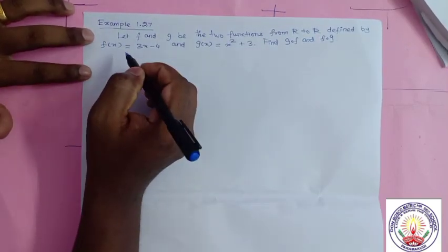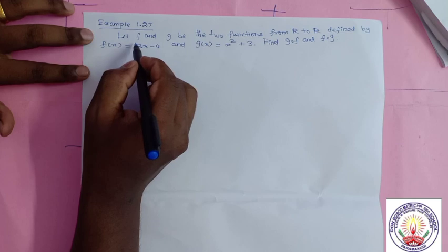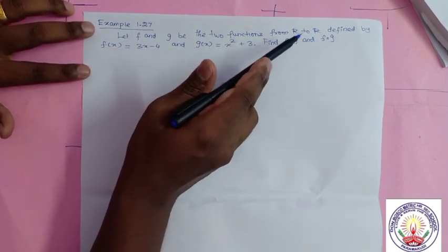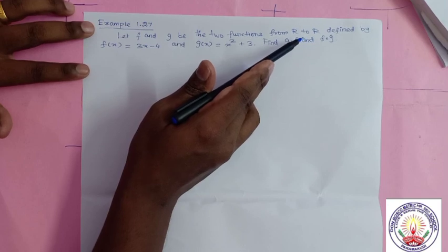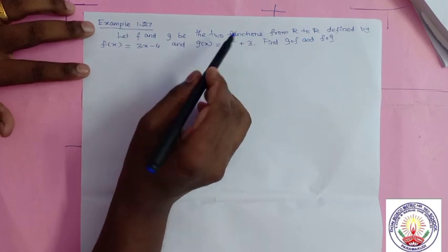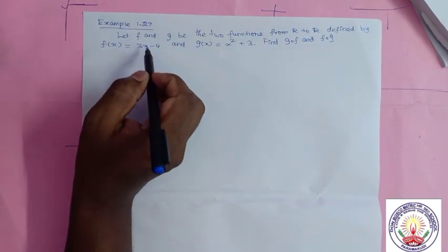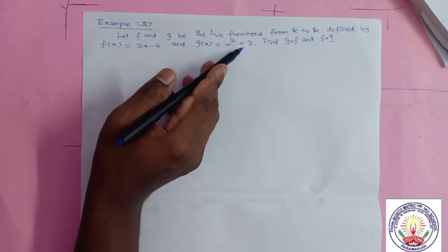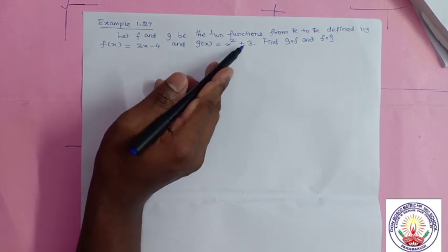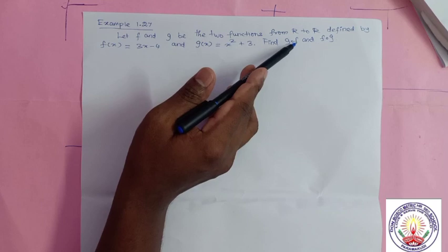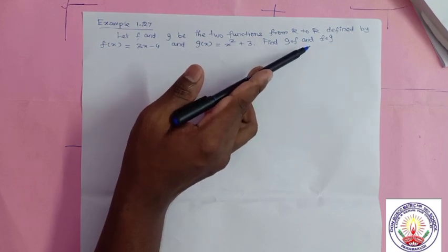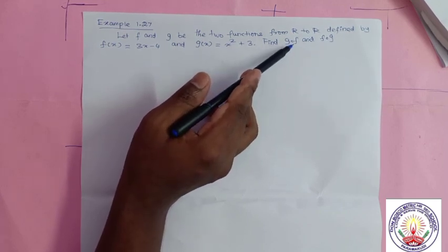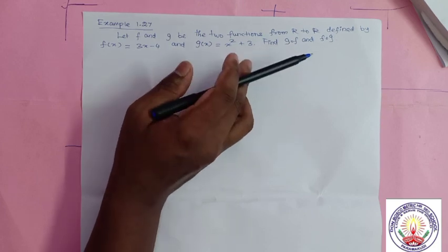Example 1.27. Let f and g be two functions from R to R defined by f(x) = 3x - 4 and g(x) = x² + 3. Find g composition f and f composition g.